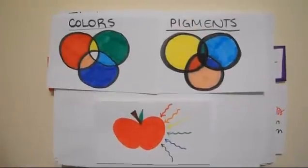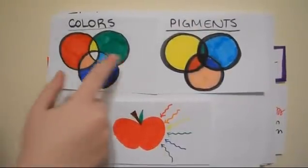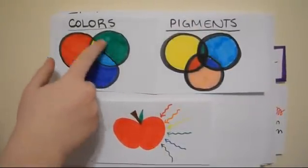The primary colors are red, green, and blue, and the secondary colors are yellow, cyan, and magenta.